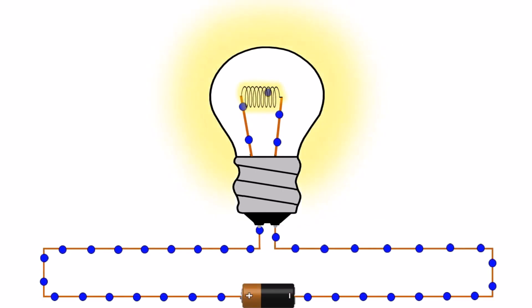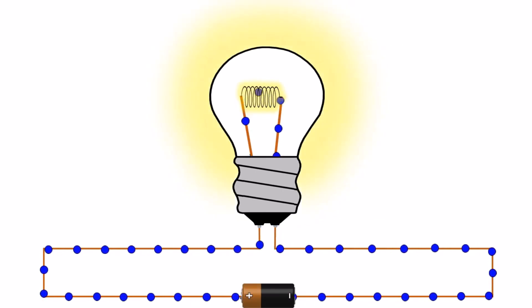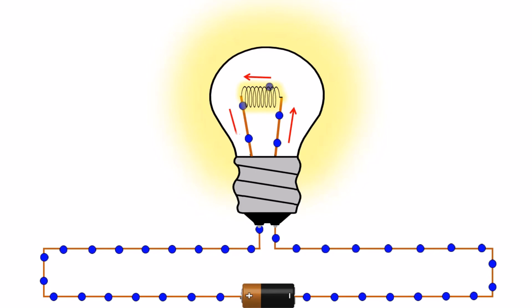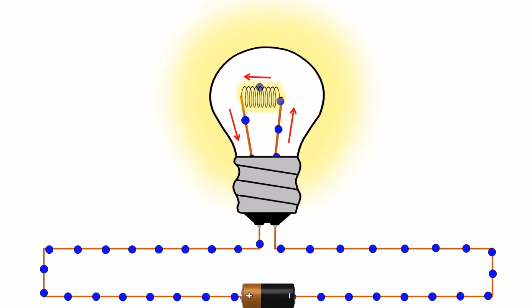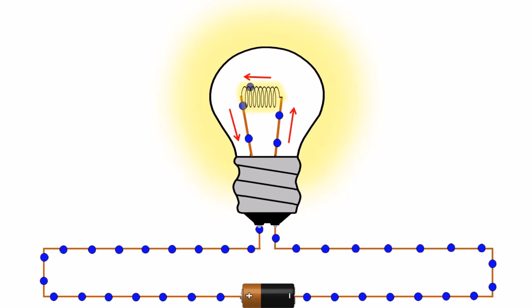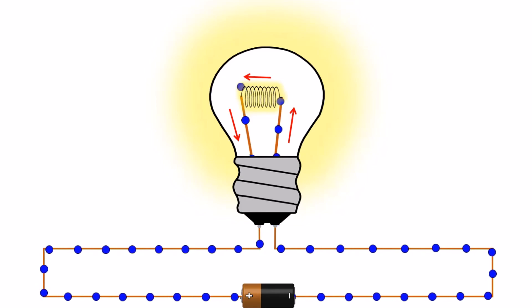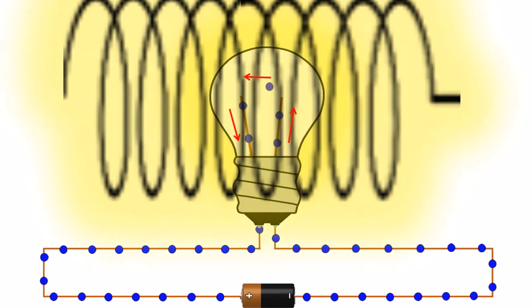When a light bulb connects to an electrical power supply, electrons start to flow from one metal contact to the tungsten filament and then to the next metal contact and out of the bulb. Tungsten filament is very thin which provides high resistance to the flow of electrons.